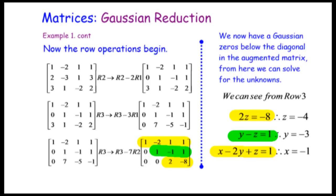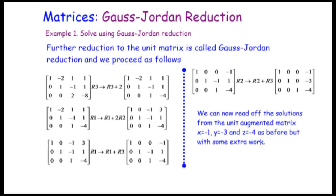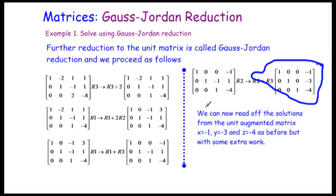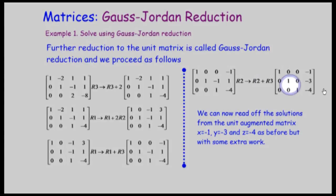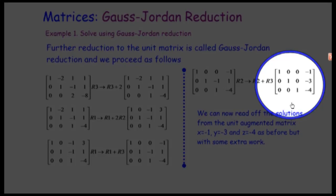In three dimensions this point is the unique point of intersection, so we have a unique solution here. If you want to go further to the Gauss-Jordan reduction, there's a bit more work involved to get zeros in all the right spots. Eventually you end up with a diagonal of ones and zeros everywhere else.